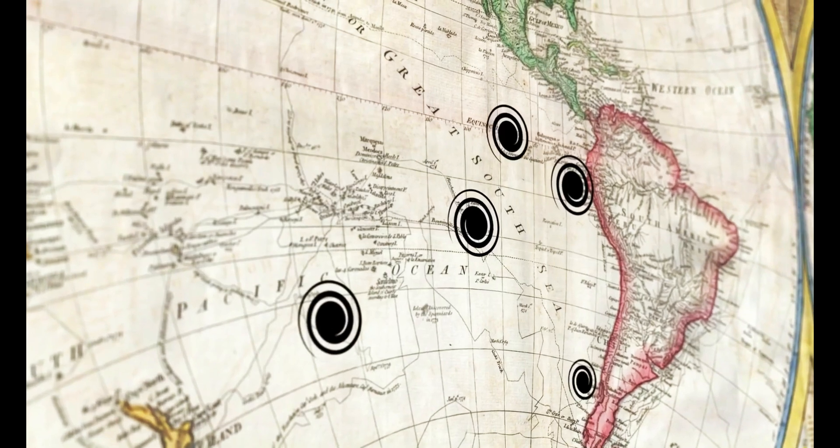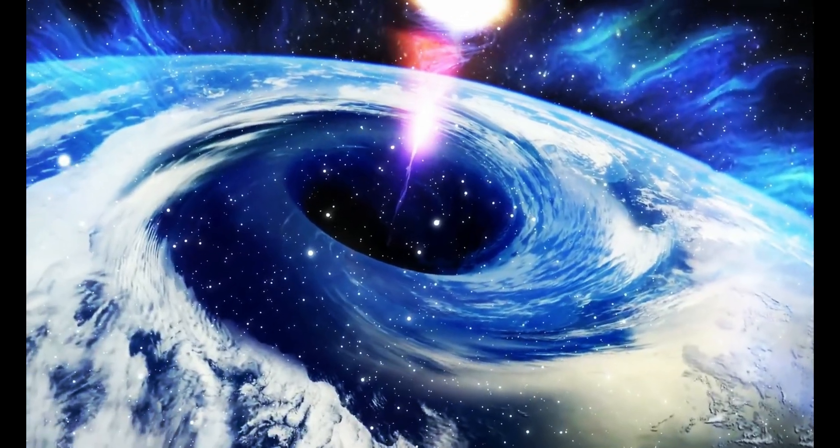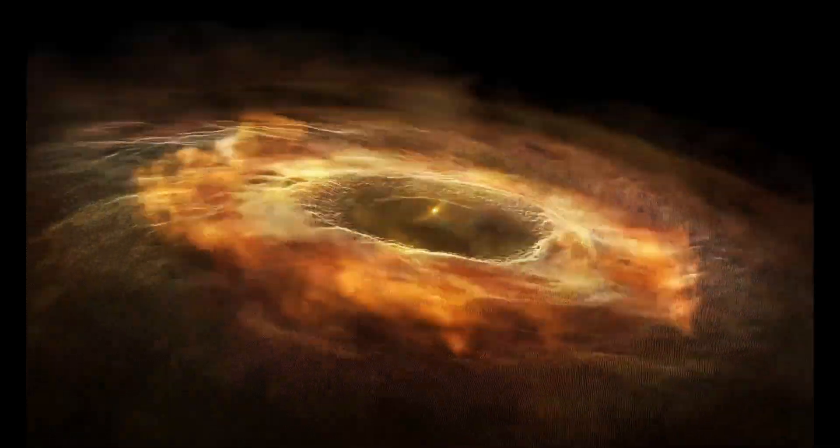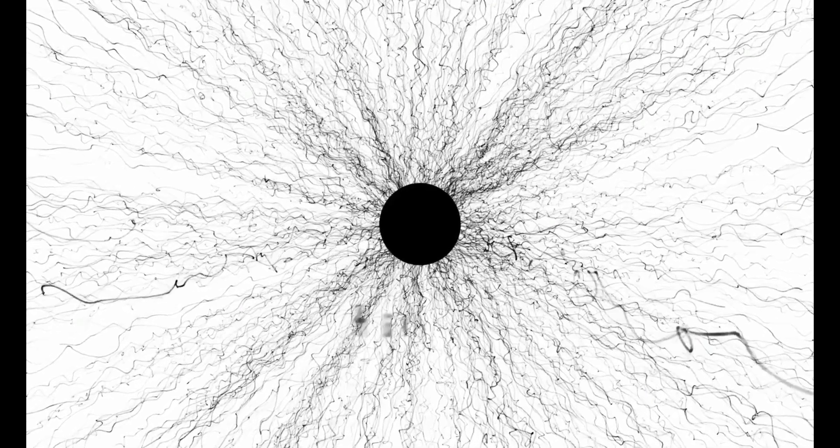But let's think about what would happen if we accidentally created a microscopic black hole on Earth. Well, nothing significant would happen. Such a mini black hole would evaporate and disappear almost instantly due to Hawking radiation. Even without the Large Hadron Collider, microscopic black holes can be created naturally, but they quickly vanish due to Hawking radiation.